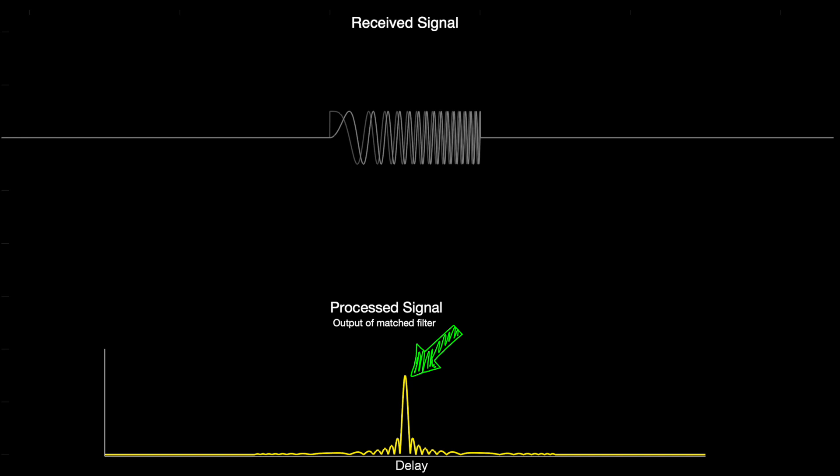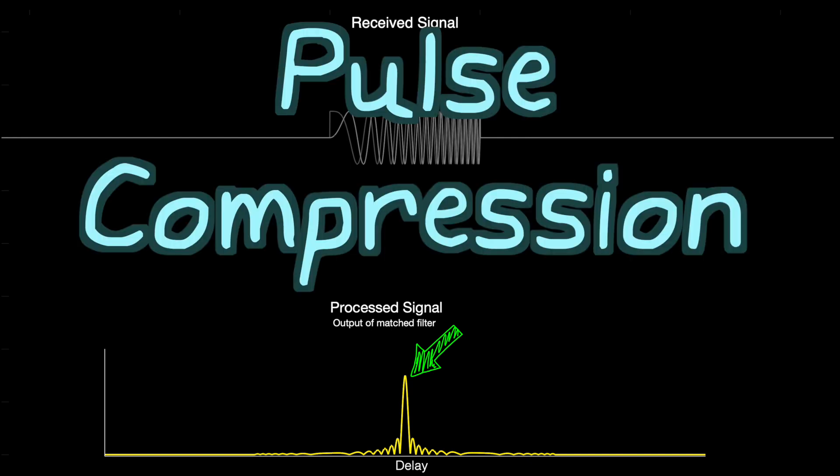So here we can see that the processed signal has a much sharper peak with an LFM waveform. It has been compressed to something that is much narrower than the original pulse. And this is why this type of technique is called pulse compression.